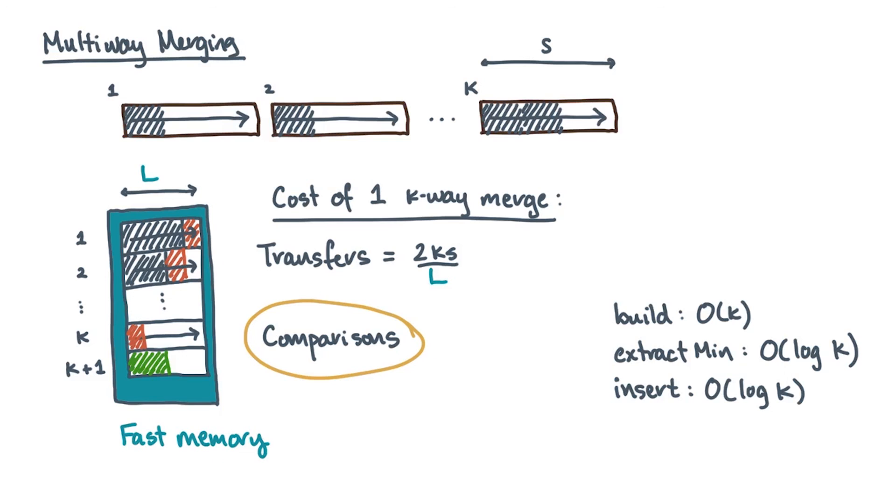First, there's the initial cost to build the heap. Then, every one of the K times S items is eventually either inserted or extracted. Since each insert or extract costs you O of log K comparisons, then that's an additional asymptotic cost of about KS log K comparisons. Remember, that's for a single K-way merge. Now's a good time to pause before seeing what happens in the full K-way merge tree.